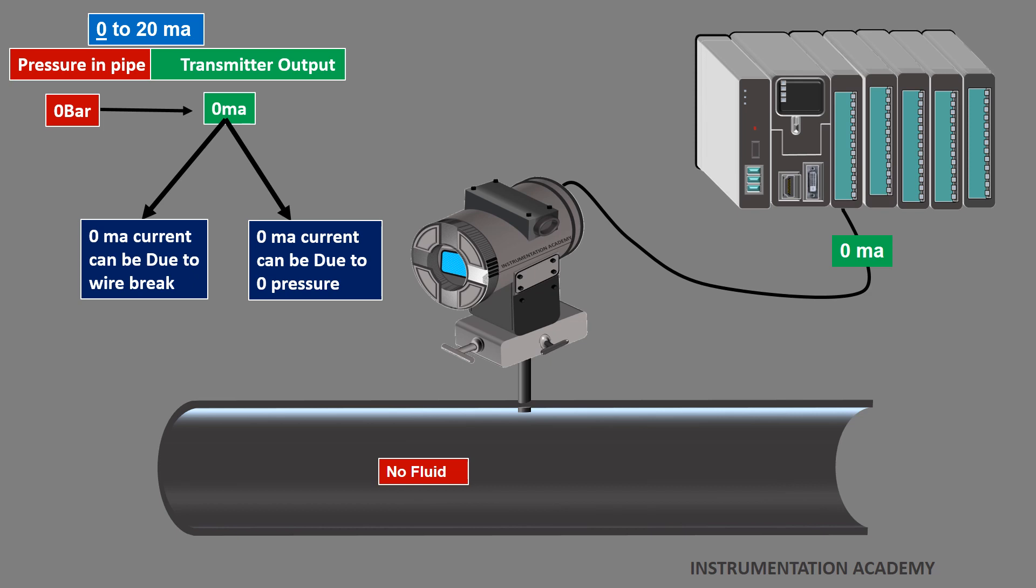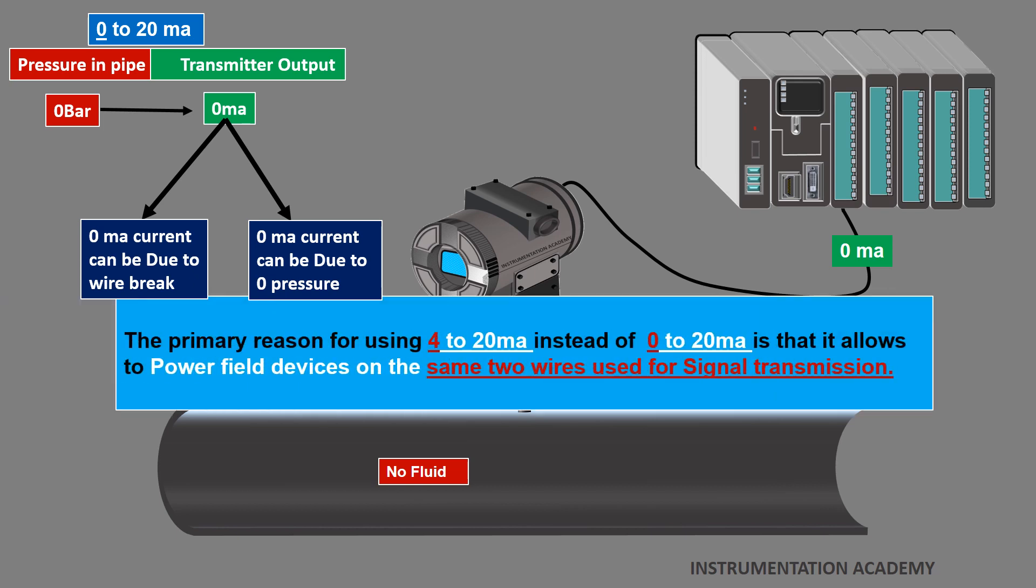The primary reason that 4 to 20 mA is used instead of 0 to 20 mA is because it allows to power the field devices on the same two wires that is used for transmitting signal.